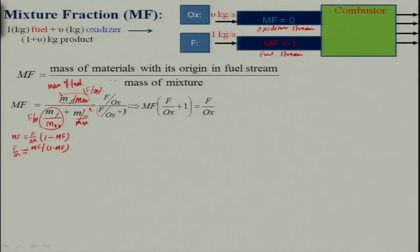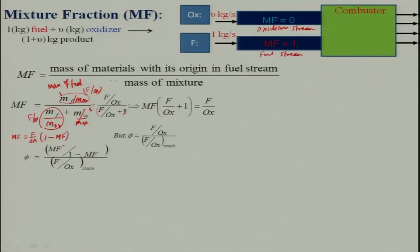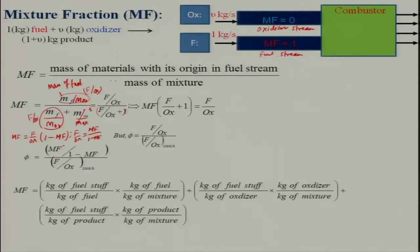We want to relate m_f to the equivalence ratio, since we have already calculated that. The equivalence ratio phi equals (fuel/oxidizer) divided by (fuel/oxidizer)_stoichiometric. Substituting our expression, phi equals [m_f / (1 minus m_f)] divided by (fuel/oxidizer)_stoichiometric. So one can relate m_f with the equivalence ratio, provided the stoichiometric fuel-to-oxidizer ratio is known.